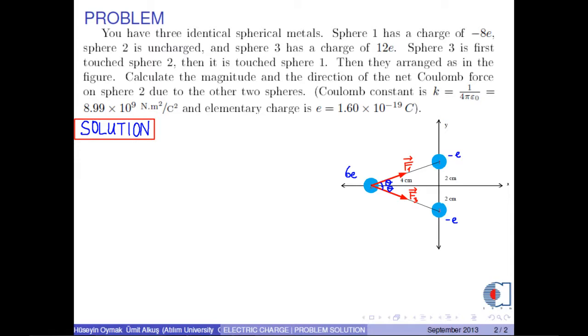According to the numerical values and the figure, the magnitudes of these forces are equal. Namely, F1 equals F3. And they are calculated to be K times the absolute value of 6e times the absolute value of negative e over R squared. Where R is the distance between 6e and each negative e. So, we write 6ke squared over R squared.